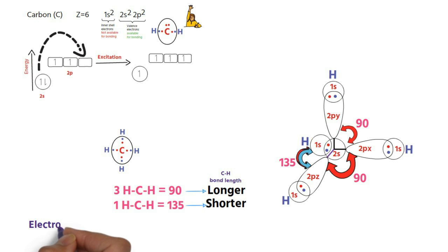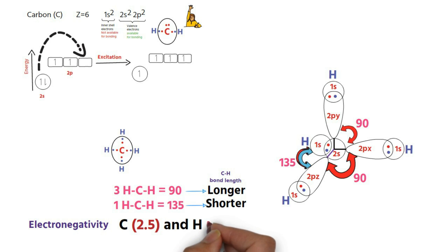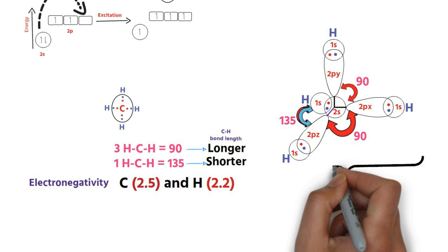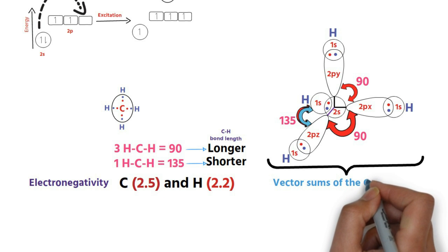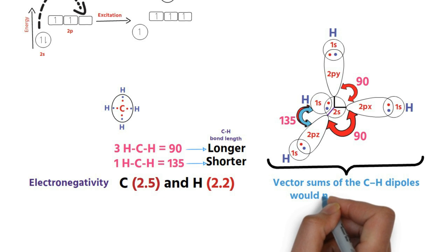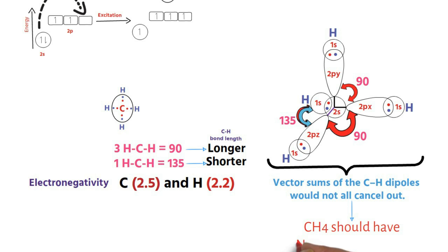Moreover, based on the electronegativity difference, each CH bond must have a small dipole moment, so that the vector sums of the CH dipoles would not cancel out in this structure. This means CH4 should have a net dipole moment.